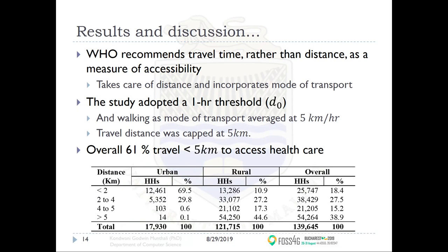To standardize, we adopted a travel time measure rather than just distance, which also incorporates mode of transport. We adopted a one-hour threshold, consistent with most of the research we studied. This one-hour threshold translates to a travel distance of about 5 kilometers regardless of mode of transport. If someone must travel more than 5 kilometers within one hour, they are considered to have poor access to health facilities.